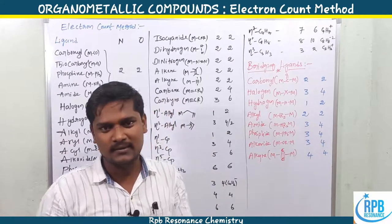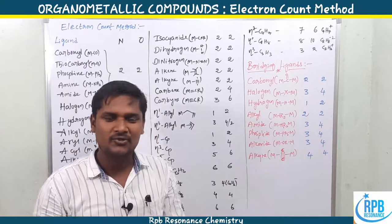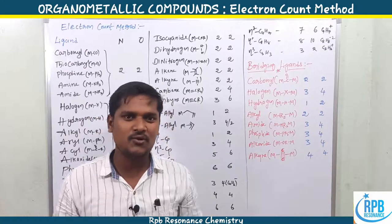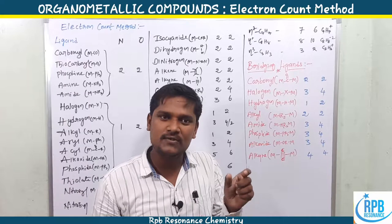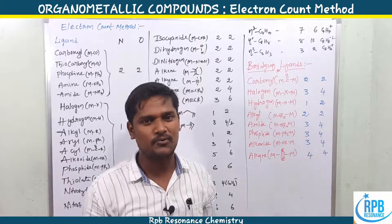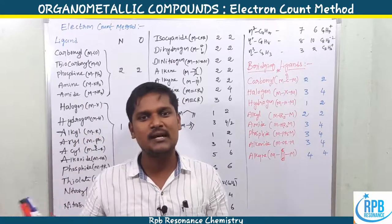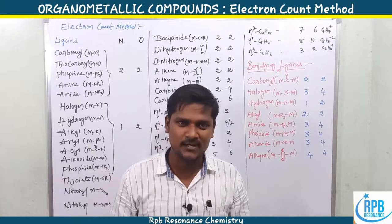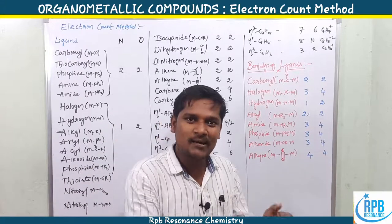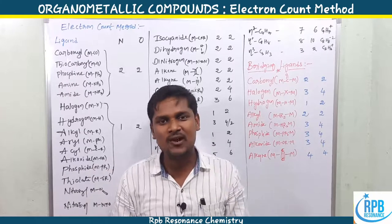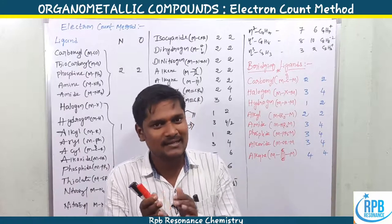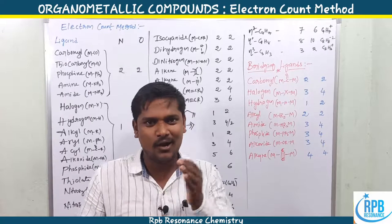The electron count method has plenty of applications. The three main applications are: first, we can predict whether a compound follows the 18-electron rule or not. If it follows the 18-electron rule, those complexes are stable compounds; if it does not follow the 18-electron rule, those are unstable compounds. Second, based on the electron count method, we can predict how many metal-metal bonds are present.